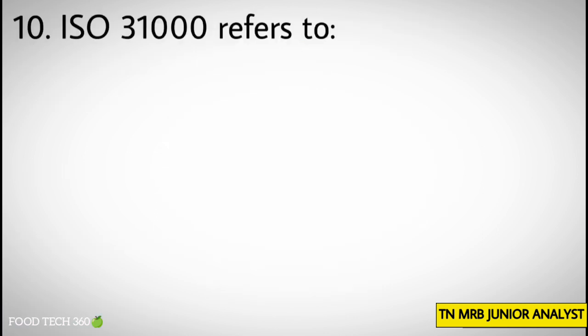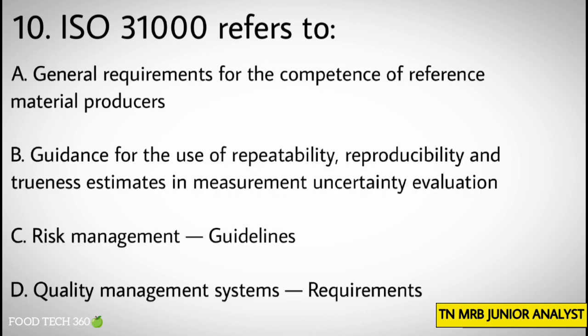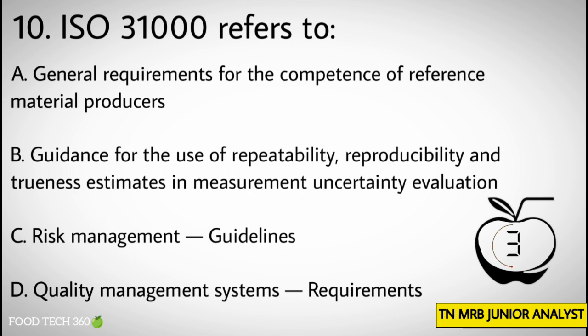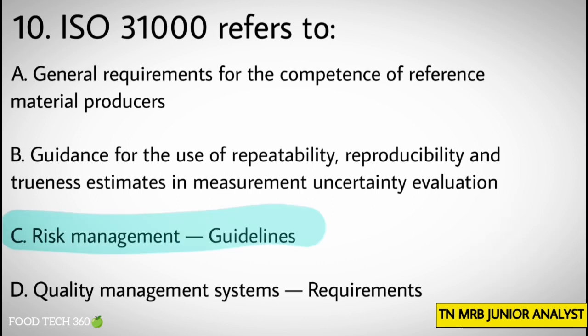Question number 10. ISO 31000 refers to — options: A. General requirements for the competence of reference material producers, B. Guidance for the use of repeatability, reproducibility, and trueness estimates in measurement uncertainty evaluation, C. Risk management guidelines, D. Quality management system requirements. Correct answer: C. Risk management guidelines.